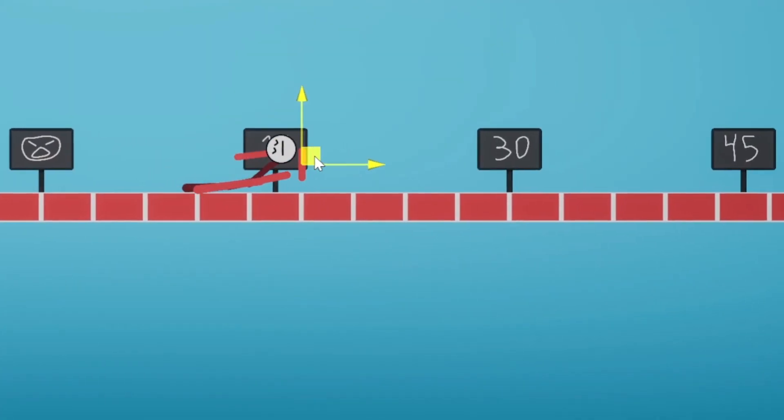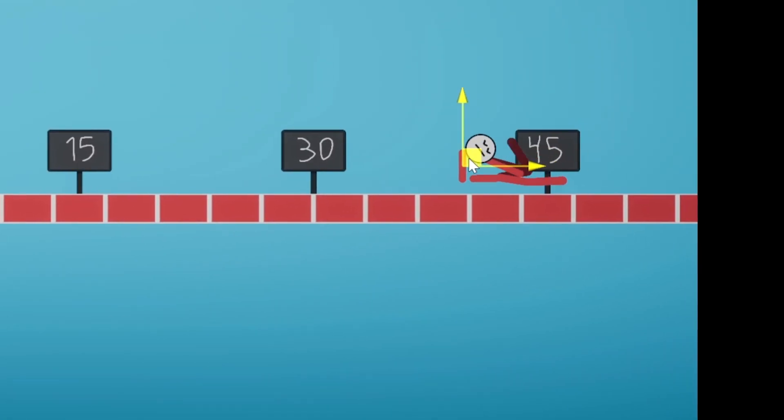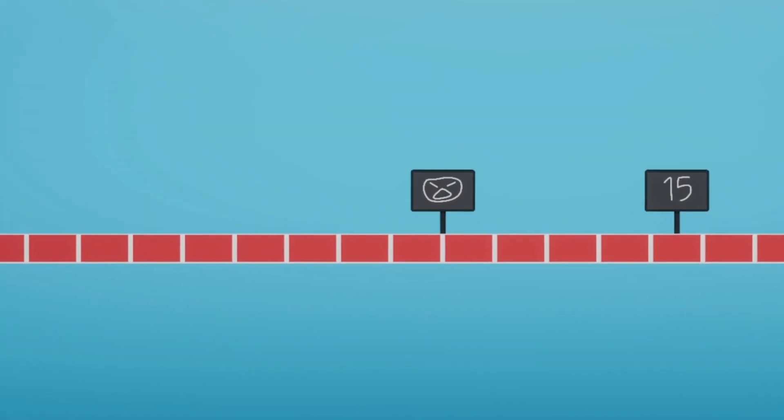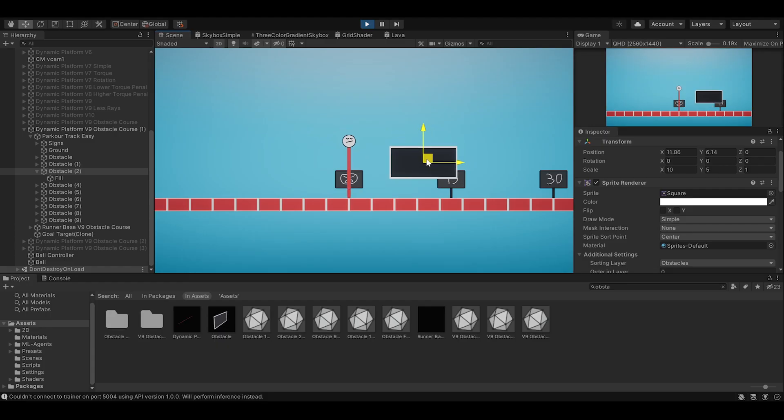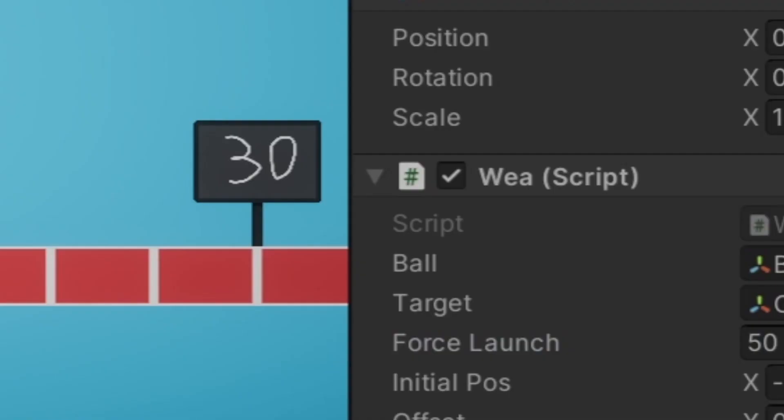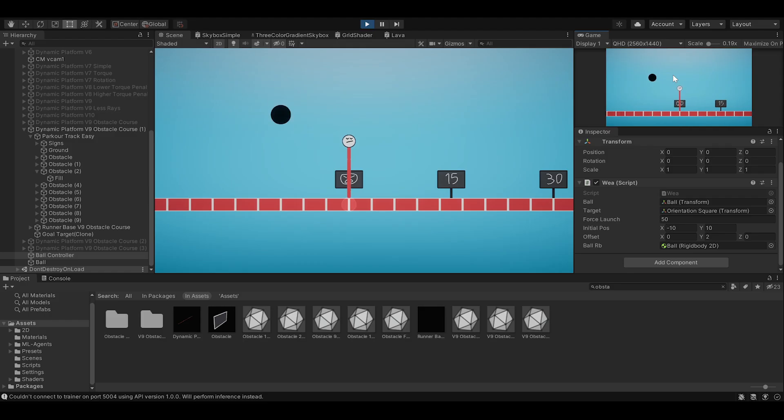For the rewards, I'm going to give it a reward depending on how fast it is moving to the right, and punish it every time it moves to the left. And obviously, if it touches an obstacle, or if it touches the ground with any other part than its feet, it's going to die, and the episode is going to reset.